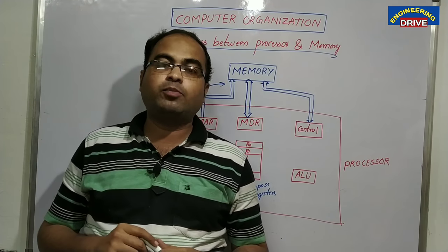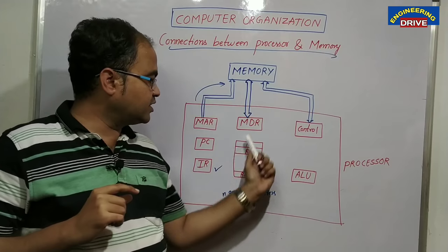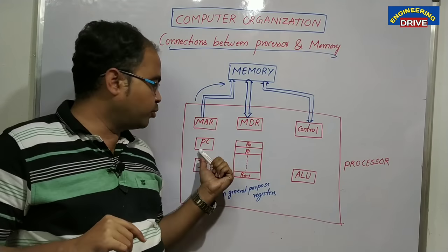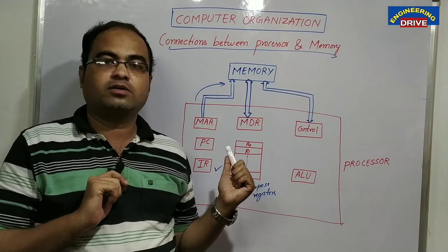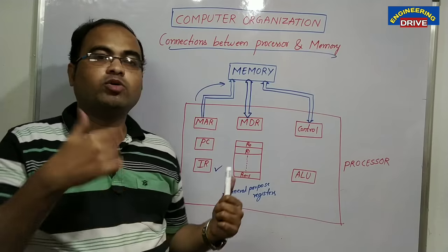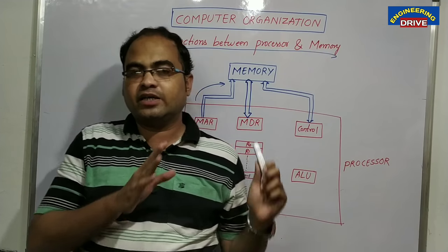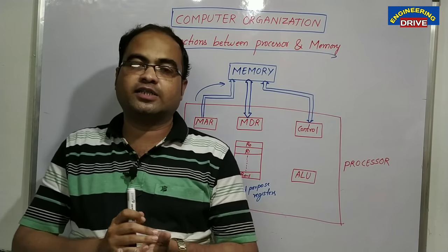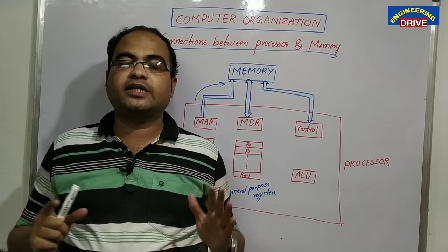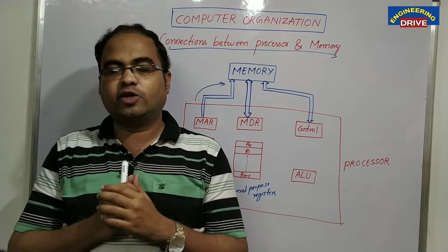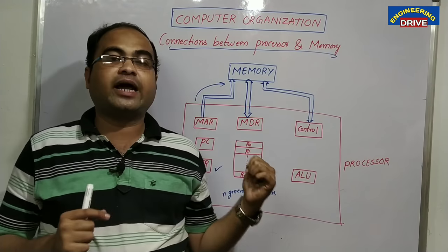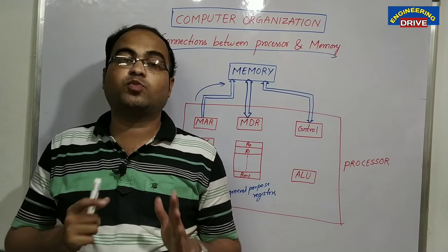The other register is the Program Counter, PC. When the first instruction has been fetched and executed successfully, the program counter value becomes 1. When the second instruction has been executed, it becomes 2. If our program has 10 instructions, the value of the program counter will become 10, meaning all 10 instructions have been successfully executed. So the program counter keeps track of how many instructions have been successfully executed.